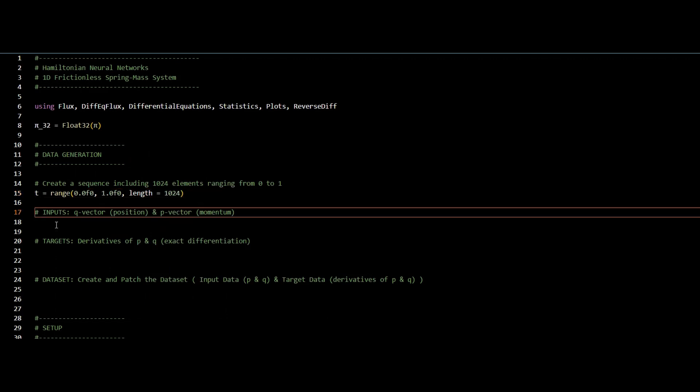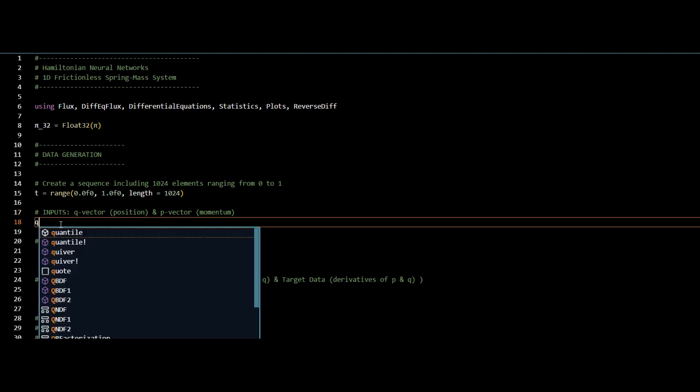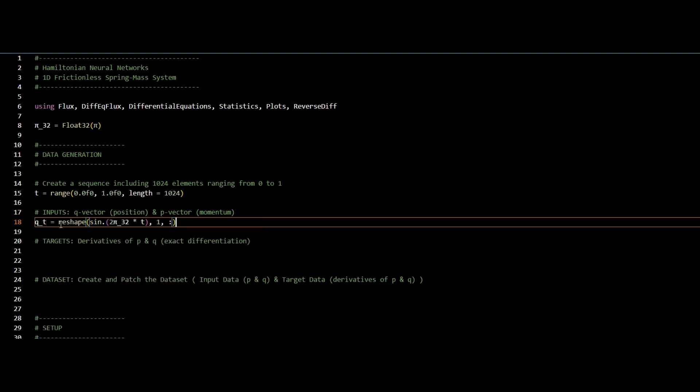Next, I will create my inputs, which are the position vector q and momentum vector p. I use the reshape function to reshape my vector into a row vector.